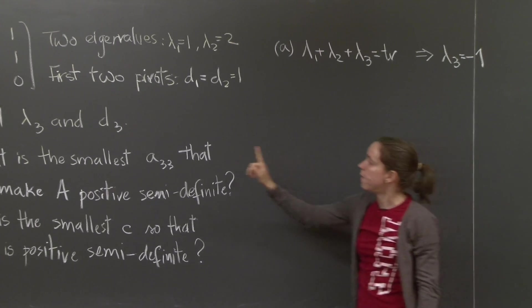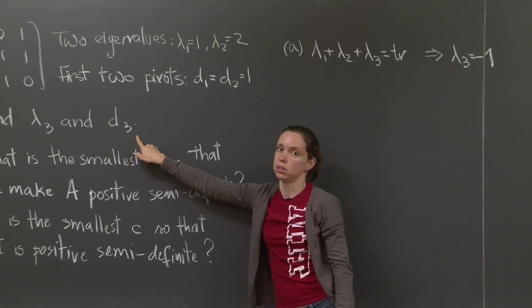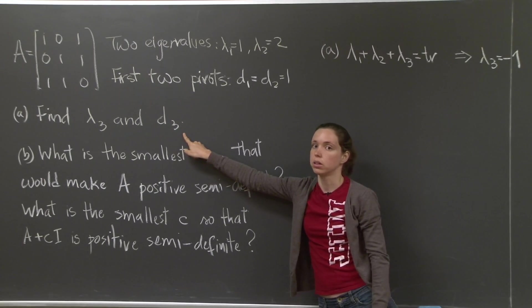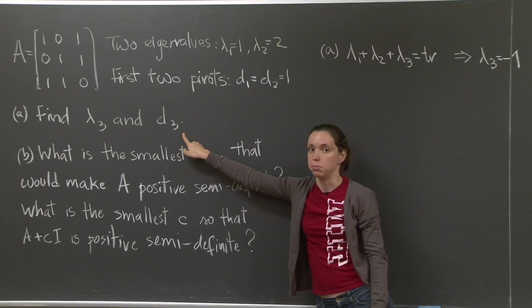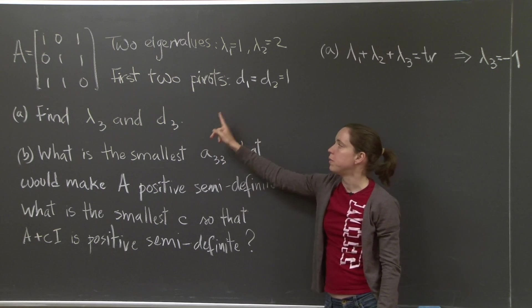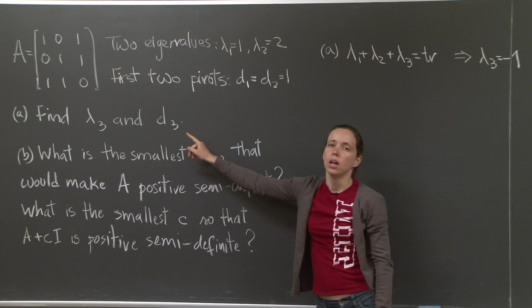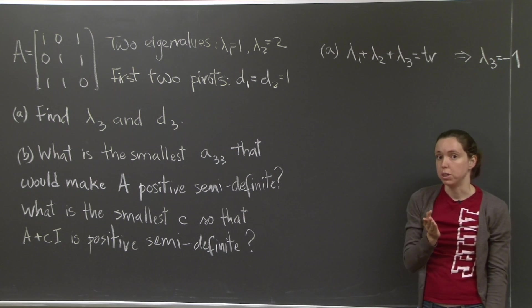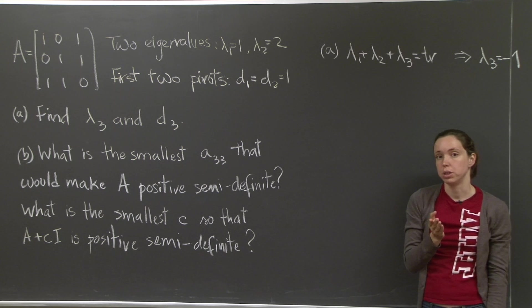On to the third pivot. We don't really want to do elimination. That would take too long. So there must be some trick that we can use. Well, we have the first two pivots and we want to know the third. Remember, when you do elimination steps, that does not change the determinant of the matrix. And you're left with an upper triangular.